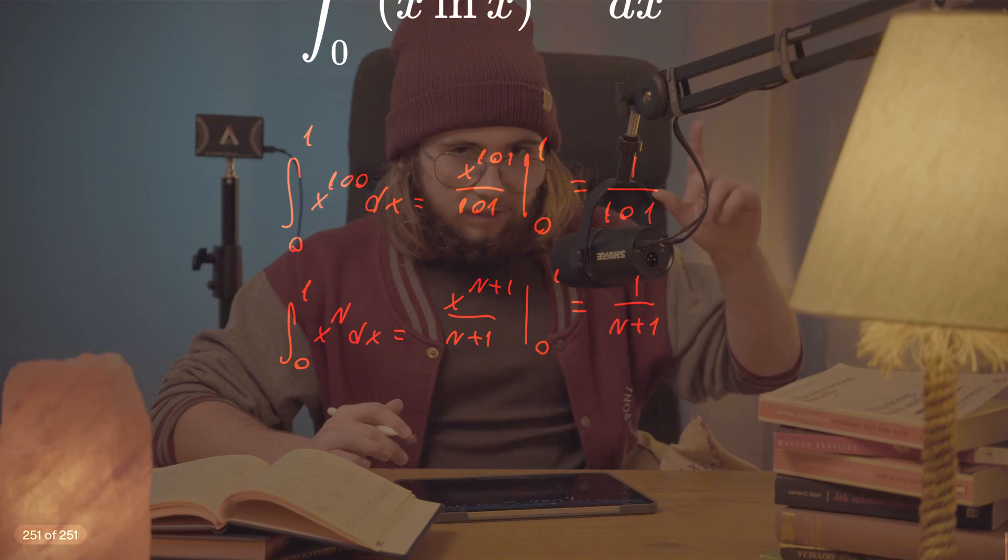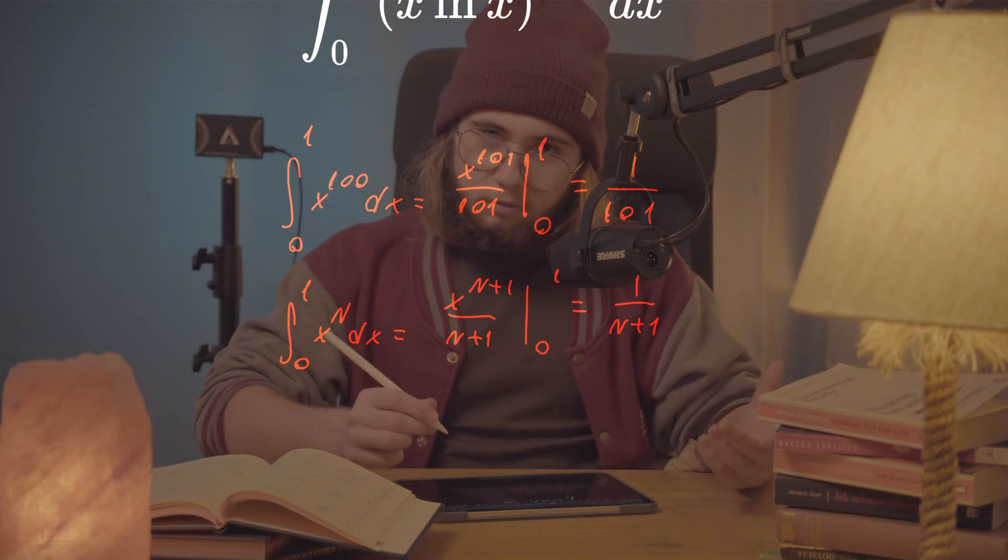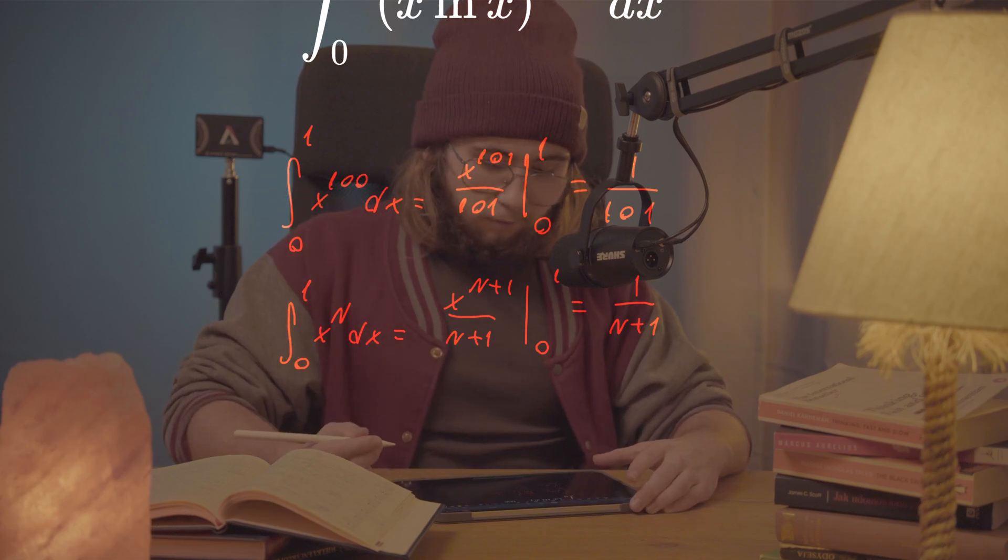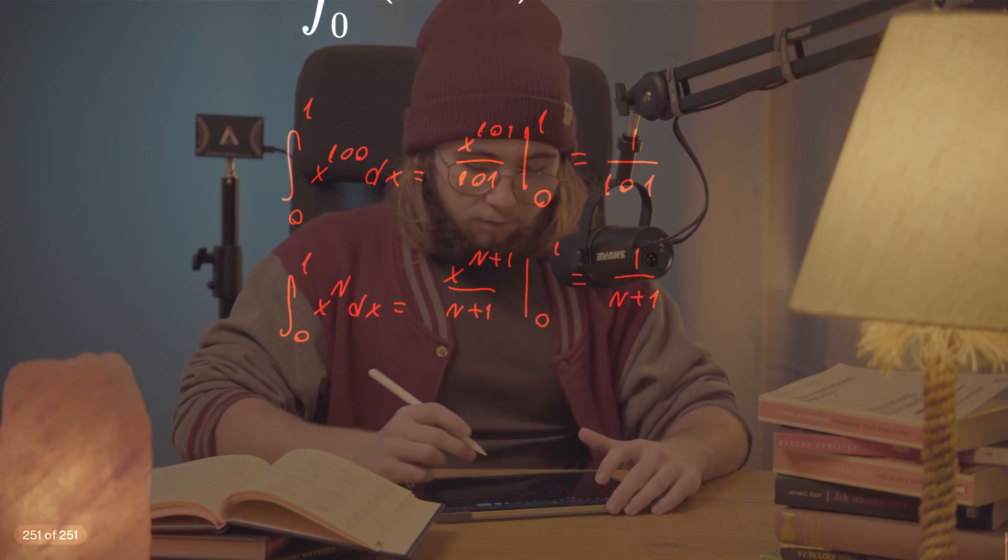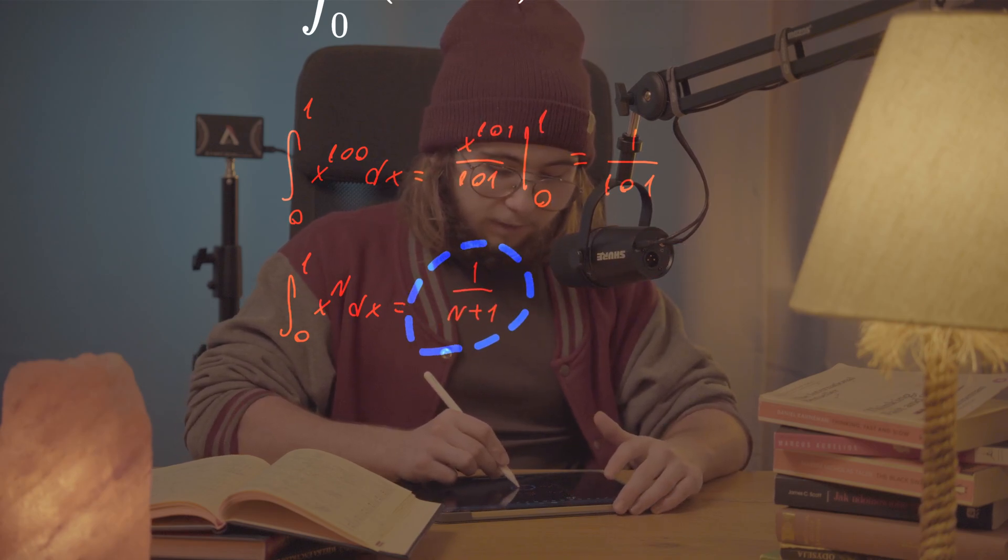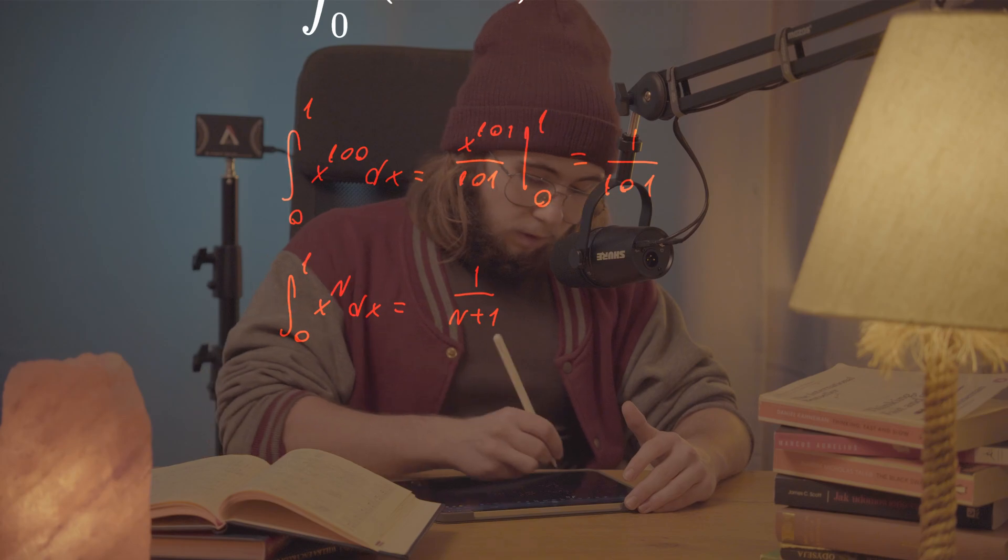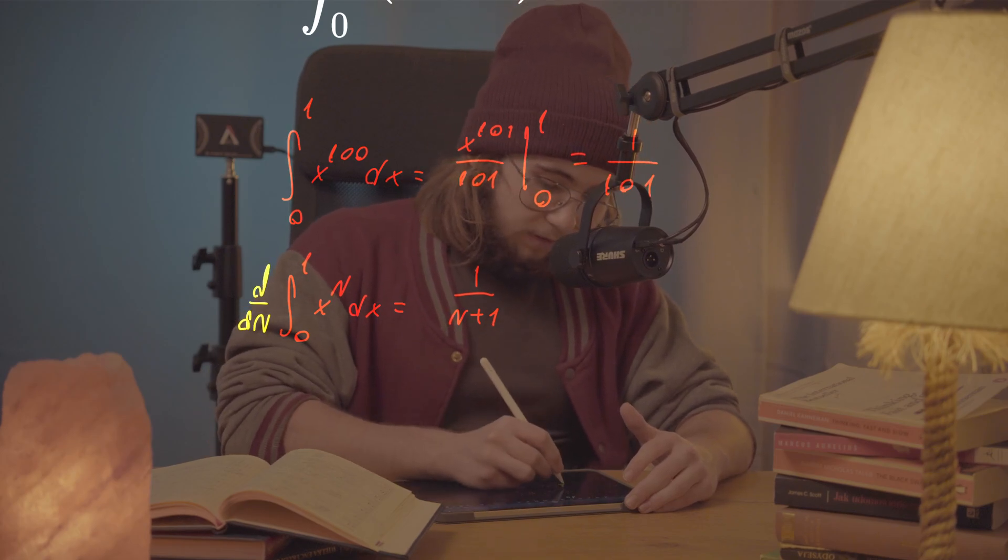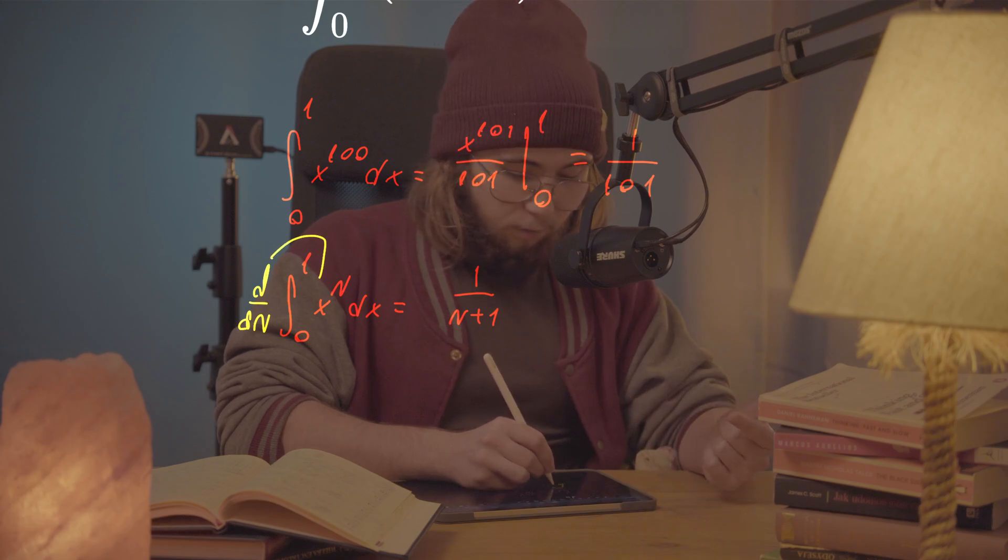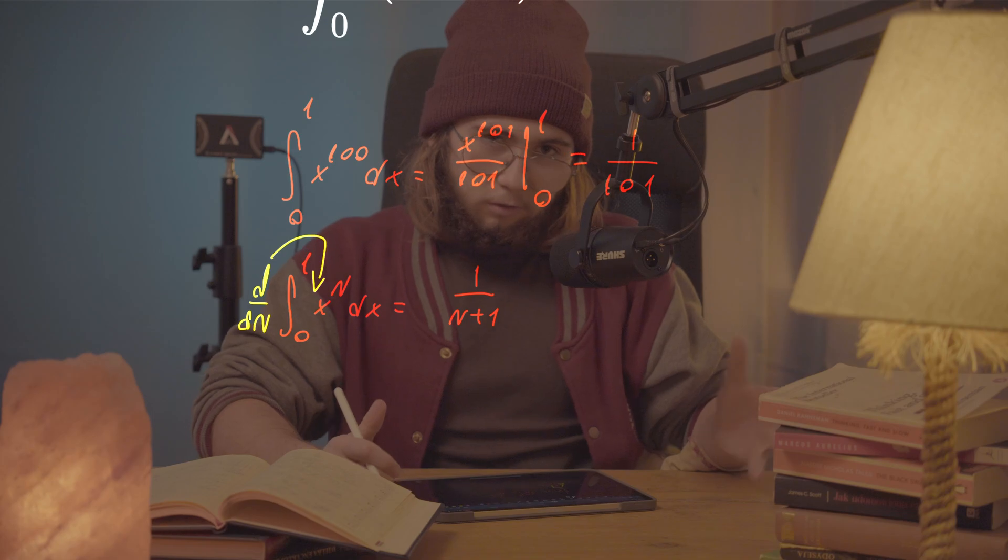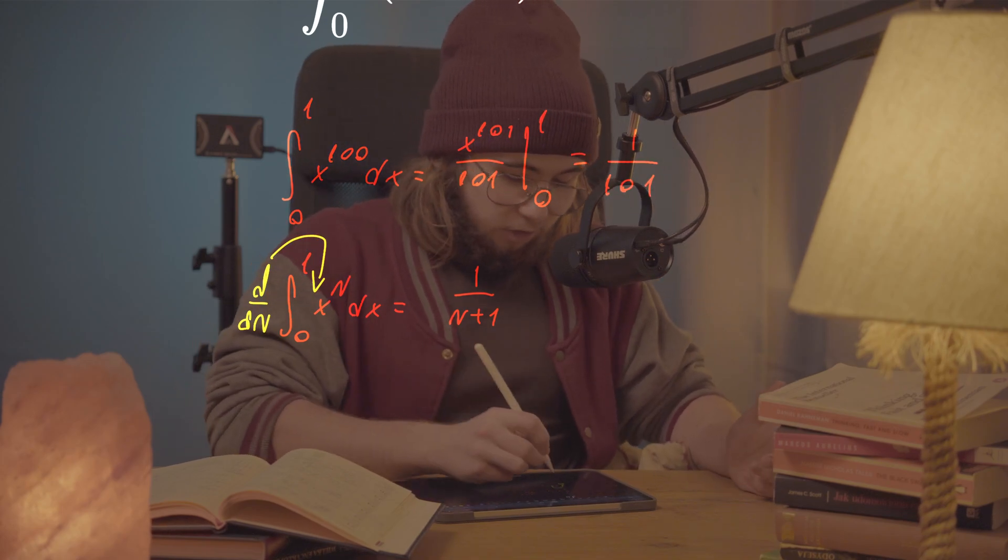But now the trick. If I were to now, for some reason, differentiate both sides of this equality, however not with respect to x, but with respect to capital N, what would I get? On the left-hand side, I would get this d/dN sign, which actually I would be able to slip into this integral sign because my integral is convergent on my domain.